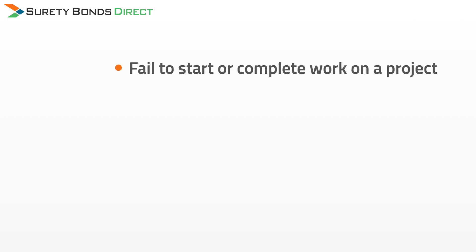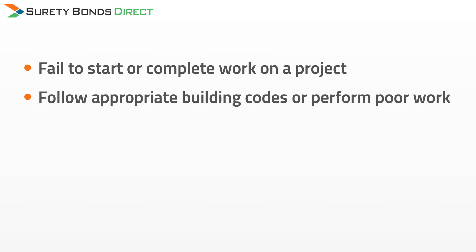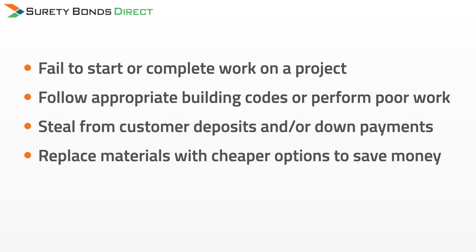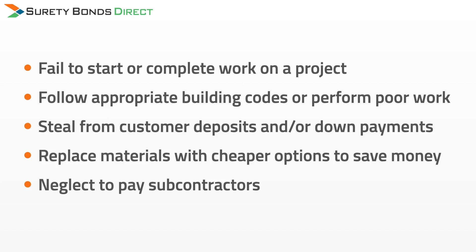Unfortunately, there are always going to be Washington contractors who will defraud their customers just to save money or increase their profits. Acts of misconduct can include failing to start or complete work on a project, not following building codes or performing inferior work, stealing from customer deposits or down payments, replacing materials with cheaper options to save money, and neglecting to pay subcontractors.